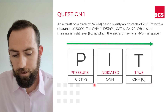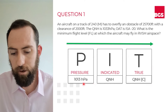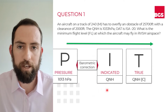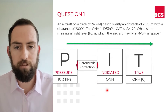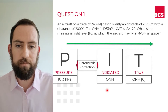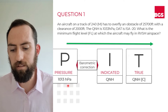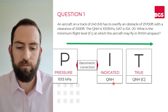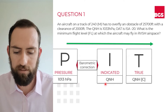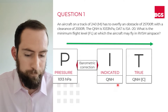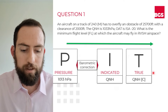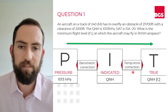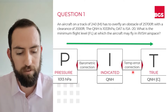If we wanted to change our pressure altitude to an indicated altitude, we would do something called a barometric correction — that's changing the figure in our altimeter subscale from 1013 to QNH. And then going from our indicated to our true altitude, we do something called a temperature error correction, where we compensate for non-standard temperatures.